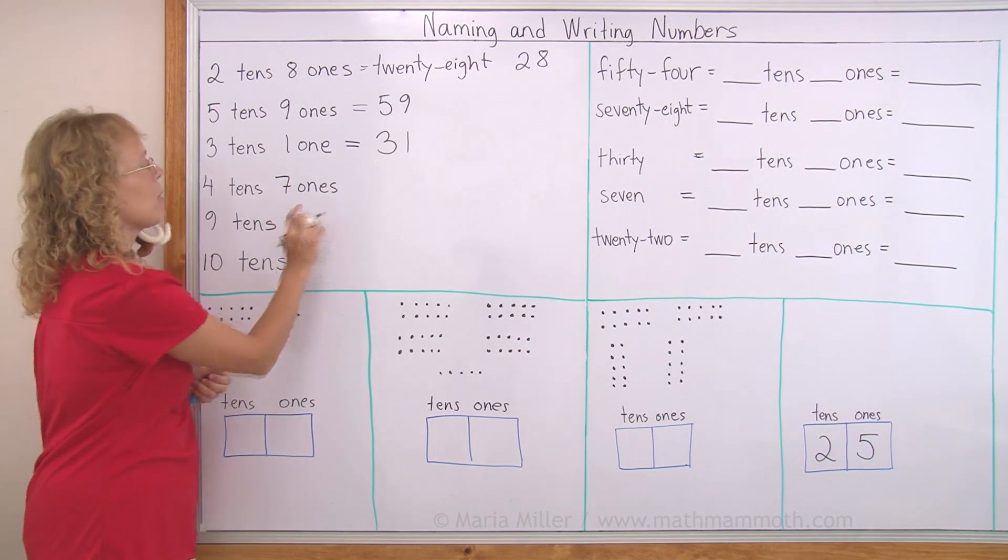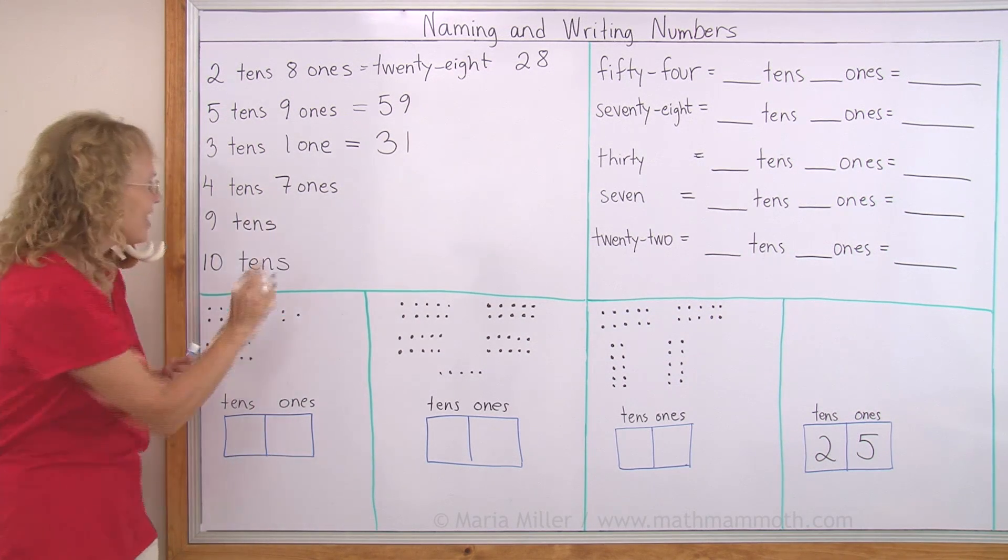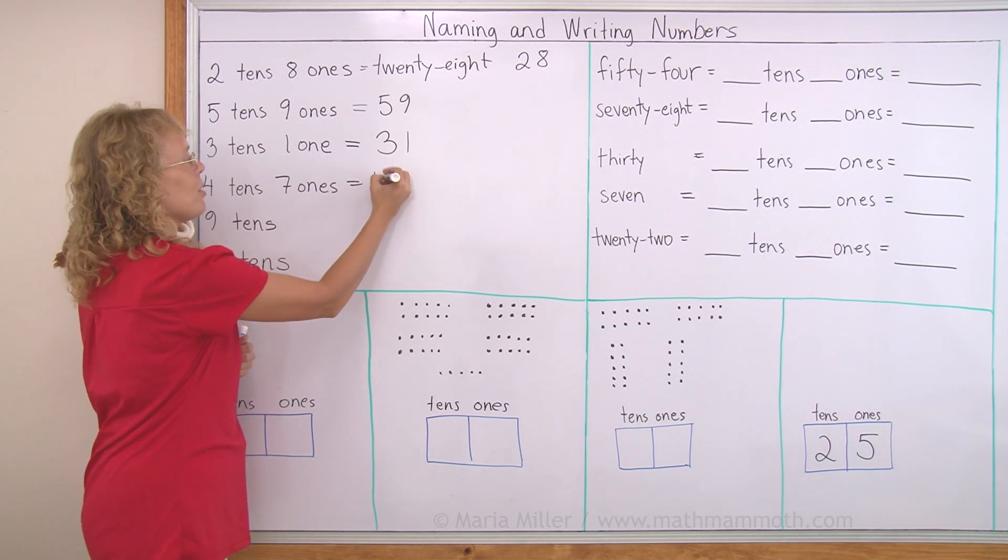4 tens, 7 ones. Okay, 4 tens was 40. 47, 4 and 7 like that.